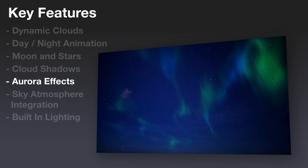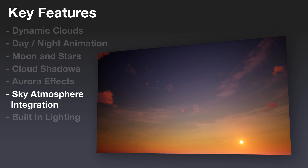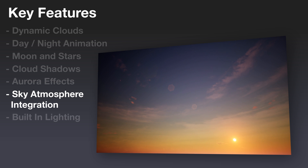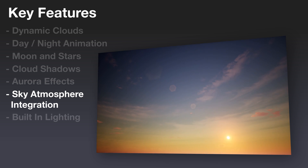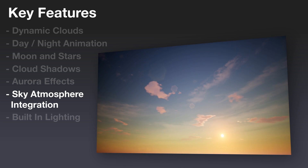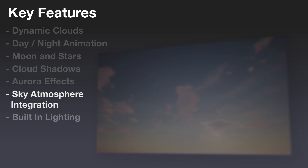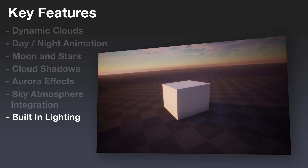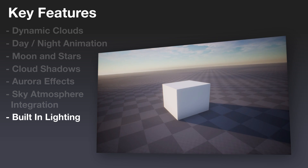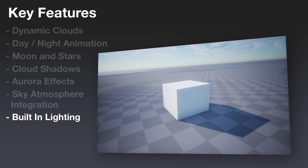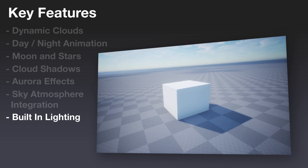If you choose, you can even enable aurora effects at night. Starting with Unreal Engine 4.24, UltraDynamic Sky is integrated with UE4's Sky Atmosphere function by default, to provide more realistic coloring through atmospheric scattering. It also comes with built-in lights for the sun, moon, and skylight, so it's faster than ever to add realistic dynamic lighting to your scenes.